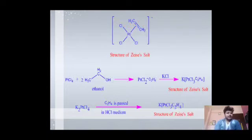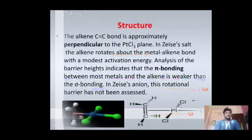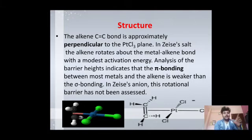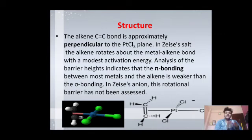In the reaction, PtCl4 reacts with ethanol to form an adduct, and when the adduct reacts with KCl it forms Zeise's salt. Regarding the structure, the C1-C2 bond from the ethylene ligand is arranged approximately perpendicular to the metal-ligand bond. Due to this perpendicular arrangement, it can rotate. One important thing is that pi bonding is always weaker than sigma bonding. The perpendicular arrangement of the ligand can be seen clearly in the structure shown.